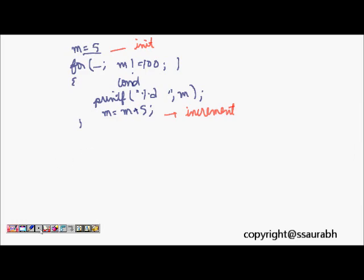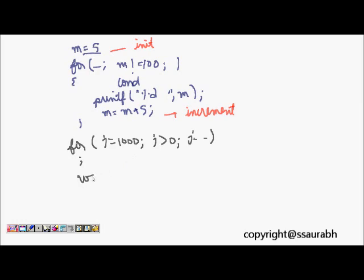We can also write a for loop without any body. For example: `for (j = 1000; j > 0; j--);` — just a semicolon. It doesn't do anything useful, but it loops for a thousand times. This is a kind of waiting mechanism — you can use a loop with a large number to create a delay.